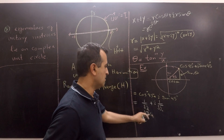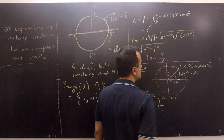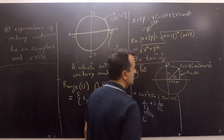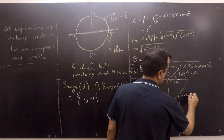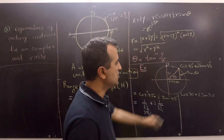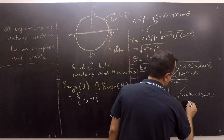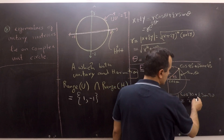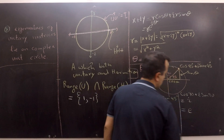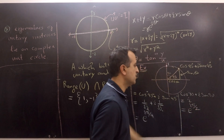Now let's write the second point, which is at 90 degrees — and this point is iota. Using the trigonometric form: cos 90° + iota sin 90°. Since cos 90° equals 0 and sin 90° equals 1, this simplifies to iota. In Euler form, this is e raised to the power iota times π/2, which is once again equal to iota. So both representations confirm this point is indeed iota.